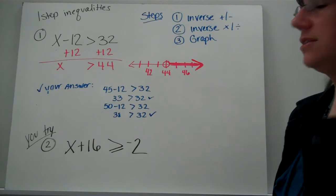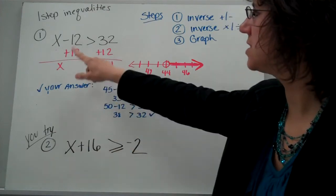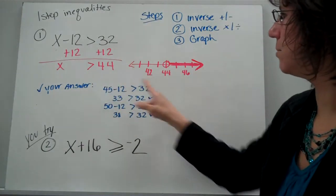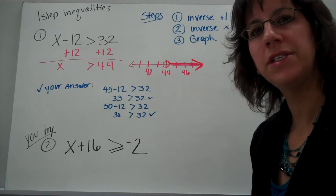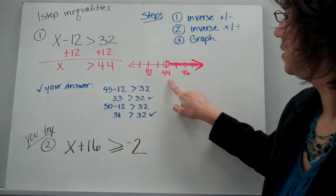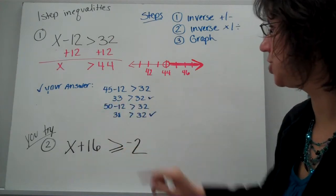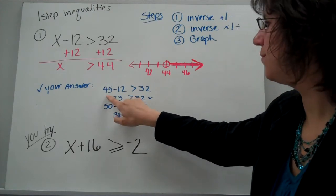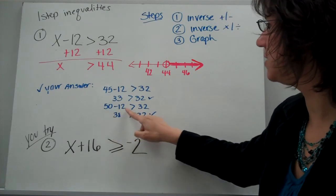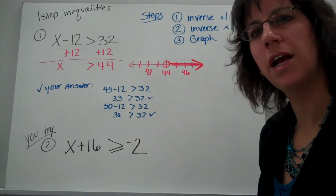Now let's look at inequalities in terms of solving. You do this the same way you would solve equations — the only difference is you carry down the inequality symbol instead of an equal sign. Every time you solve an inequality, you also need to graph it. For example, x is greater than 44, so any number bigger than 44 works. You can check: 45 minus 12 is 33, and 33 is bigger than 32. Try the next example on your own, then come back for the answer.